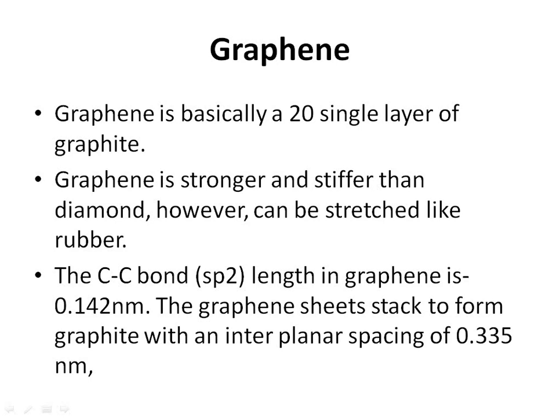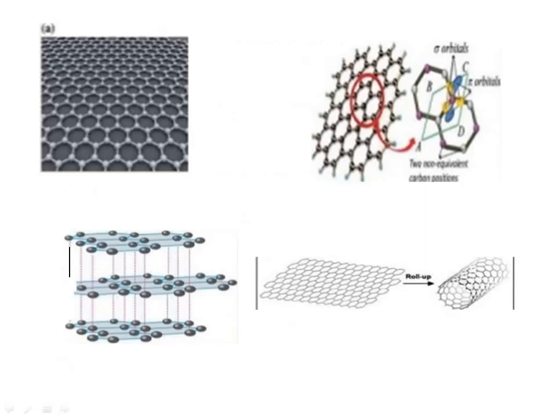Graphene. Graphene is basically a 2D single layer of graphite. Graphene is stronger and stiffer than diamond, however it can be stretched like rubber. The C-C bond (SP2) length in graphene is 0.142 nm. Graphene sheets stack to form graphite with an interplanar spacing of 0.335 nm. Graphene can be rolled up to make carbon nanotubes.